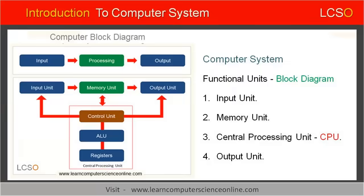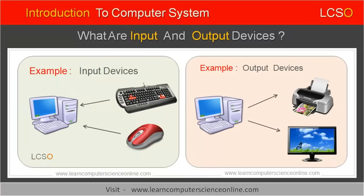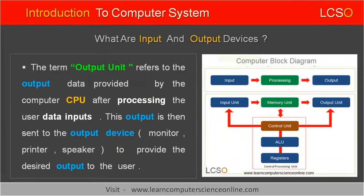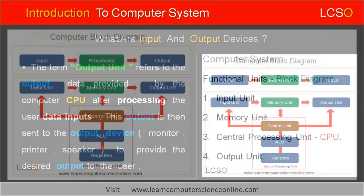The fourth unit of the computer is called the output unit. The output unit consists of various output devices connected to the computer system, such as display monitor, printer, projector, and other output devices. The main function of the output unit is to present the processed data by the computer.